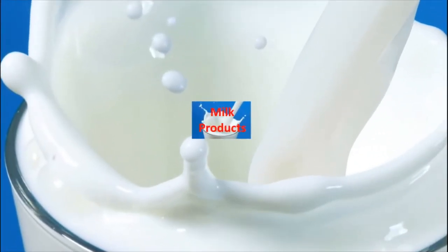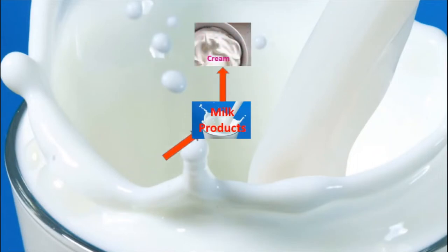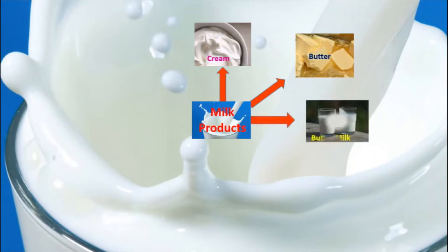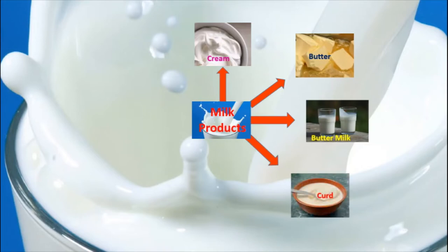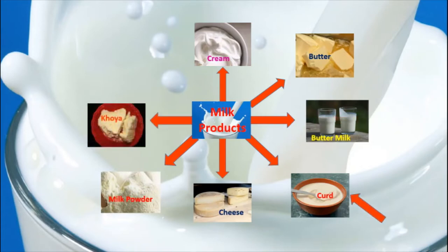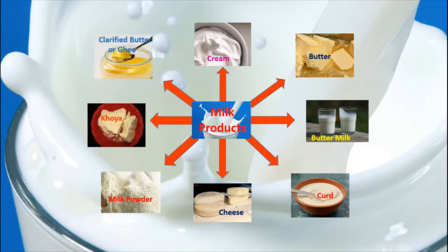The primary milk products are: Cream, Butter, Buttermilk, Yogurt, Cheese, Milk Powder, Khoya, and Clarified Butter.